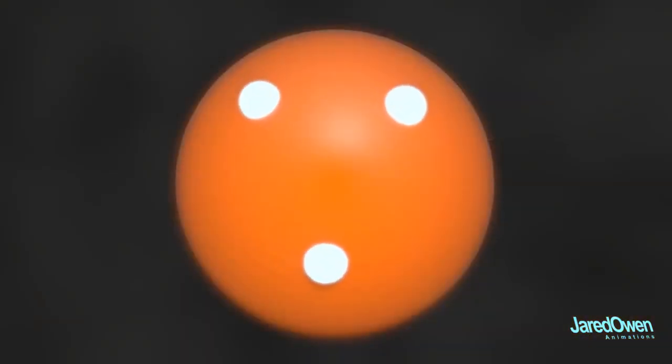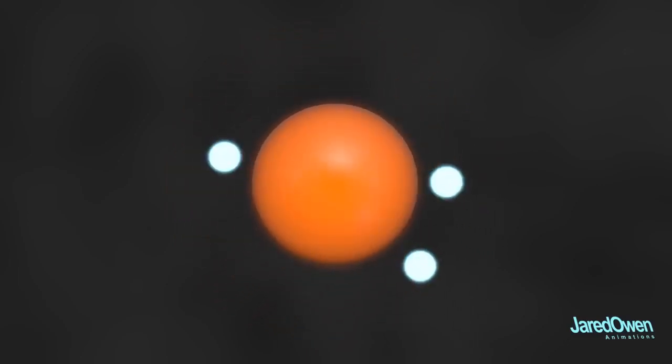First, we thought atoms looked like this. A positively charged sphere with negatively charged electrons floating around it. Then we learned that this positively charged sphere was actually a lot smaller. We called this the nucleus. Slowly but surely, we learned that the nucleus is made up of protons and neutrons.